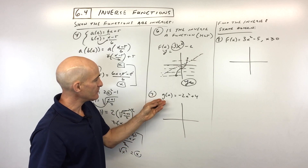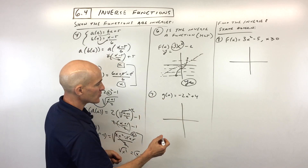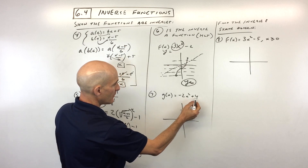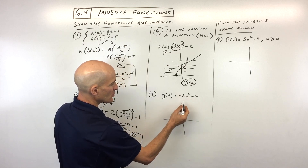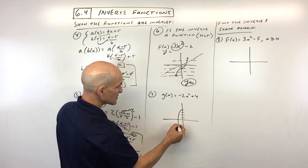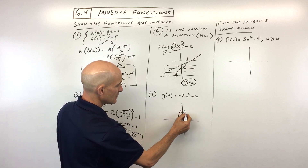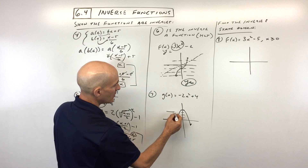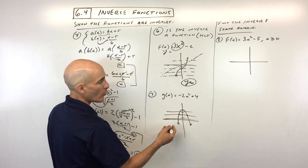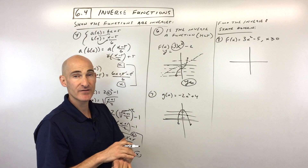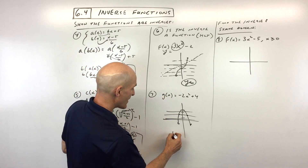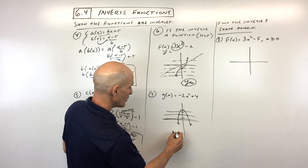Number seven: g of x equals negative 2x squared plus 4. This is a parabola — x squared is a parabola — the negative 2 stretches and reflects it, and it shifts up 4. When we do the horizontal line test, you can see it's crossing the graph at more than one point. This means it's failing the horizontal line test, so the inverse of this function is not a function.